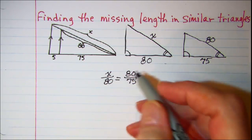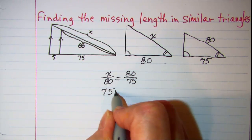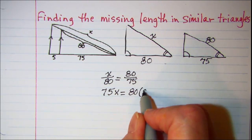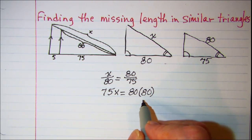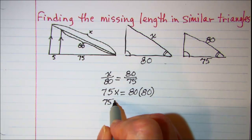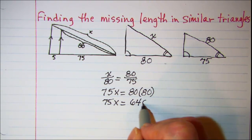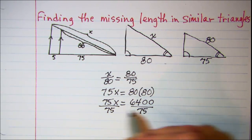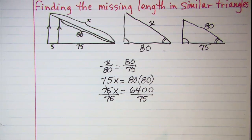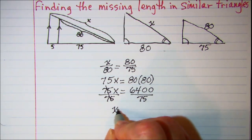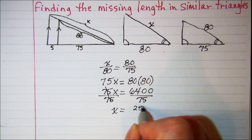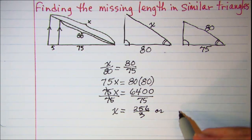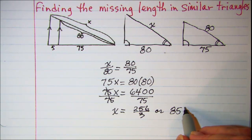Cross multiplying, we have 75 times x is equal to 80 times 80, which is 6400. Divide both sides by 75 — these will cancel — and x is equal to 256 over 3, or if we want to make this a mixed fraction, that would be 85 and 1 third.